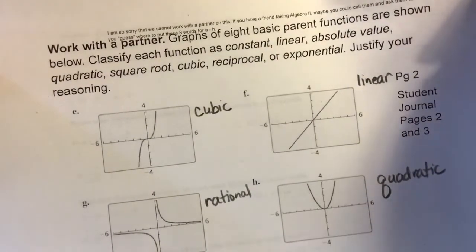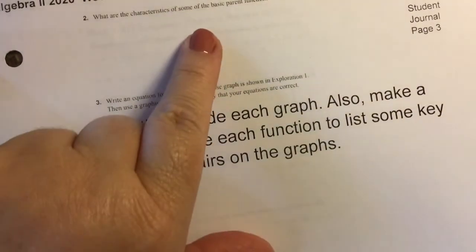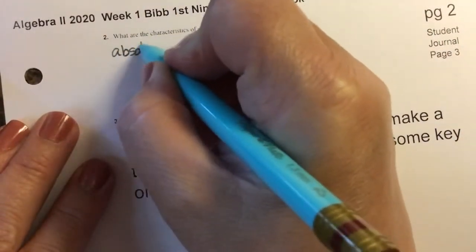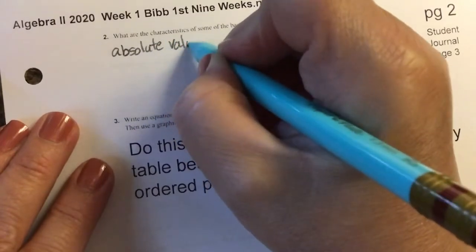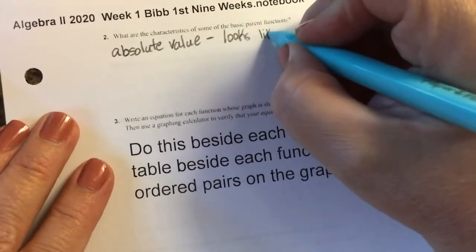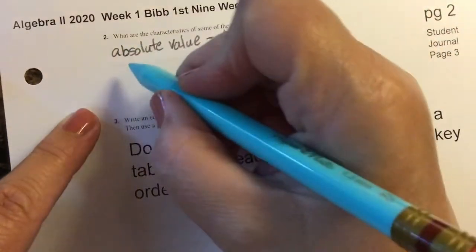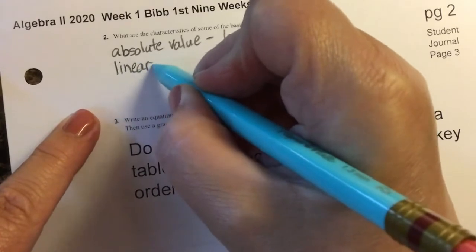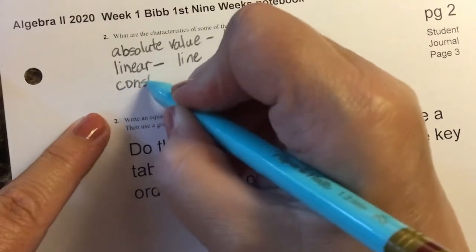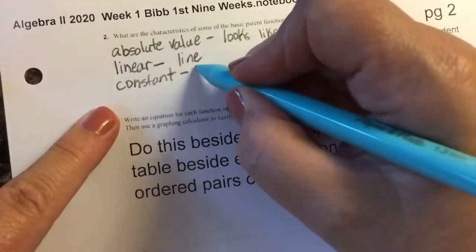Let's go on to the next page. It says what are the characteristics of some of the basic parent functions. One of the ones that I like to point out is absolute value. What does absolute value look like? Students usually tell me that it looks like a V. Every absolute value problem is going to look like a V, it could be an upside down V. A linear function is going to be a line.